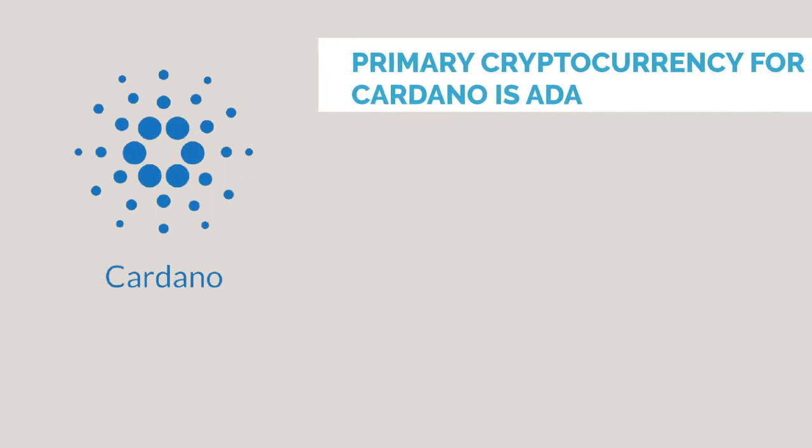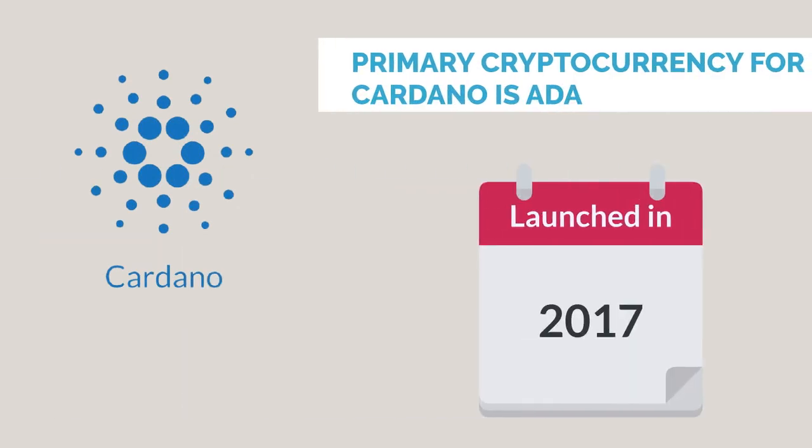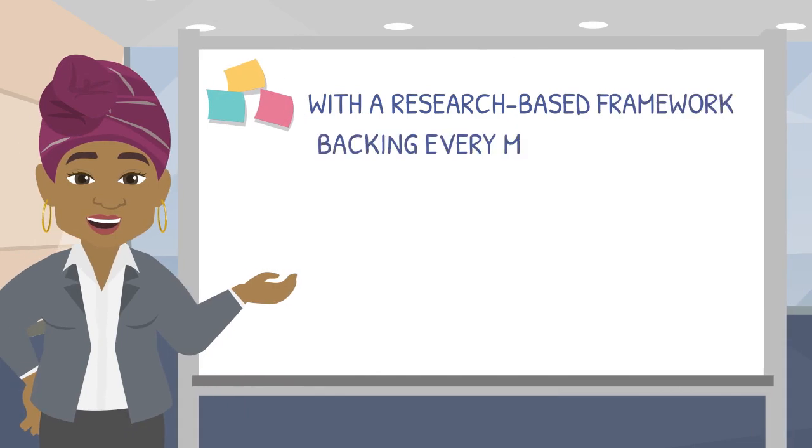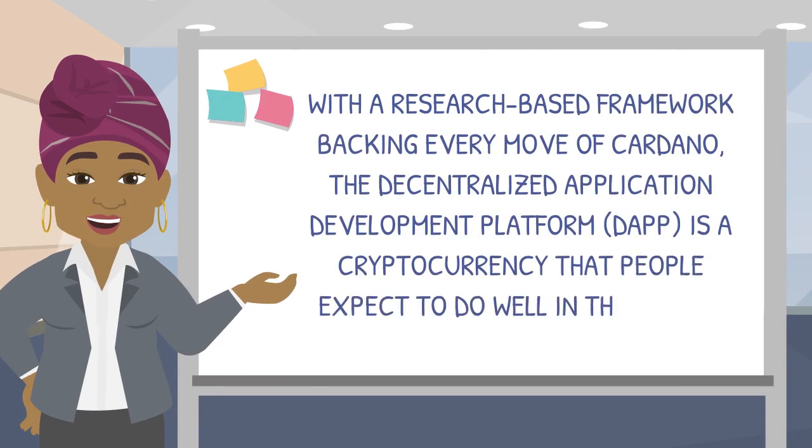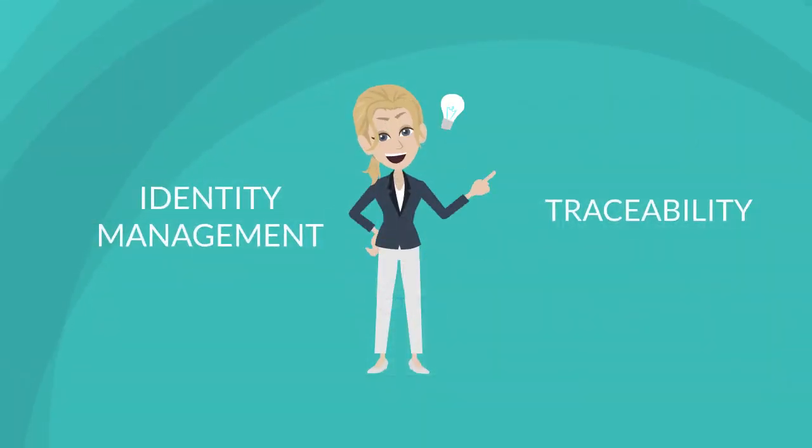The primary cryptocurrency for Cardano is ADA, which was launched as a token in the year 2017. With a research-based framework backing every move of Cardano, the Decentralized Application Development Platform, or DAAP, is a cryptocurrency that people expect to do well in the coming future. Cardano's primary applications include identity management and traceability.